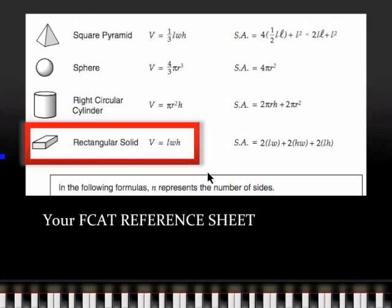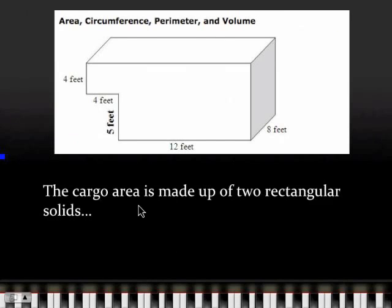The volume, or the space taken up by that rectangular solid, is its length times width times height. So we're dealing with rectangular solids, and we've got to find a length, width, and height for each of these rectangular solids that the cargo area is made up of.